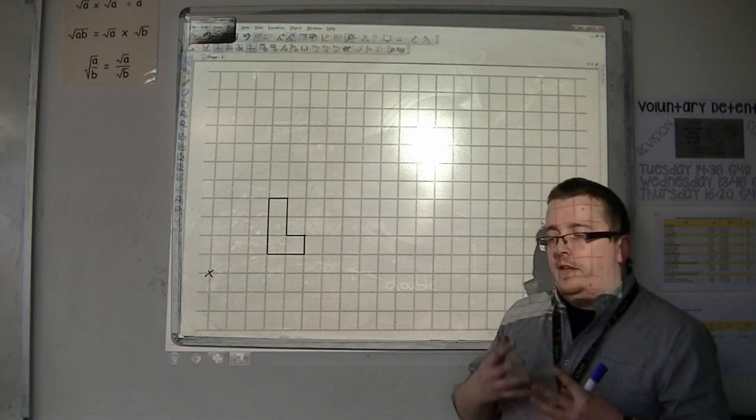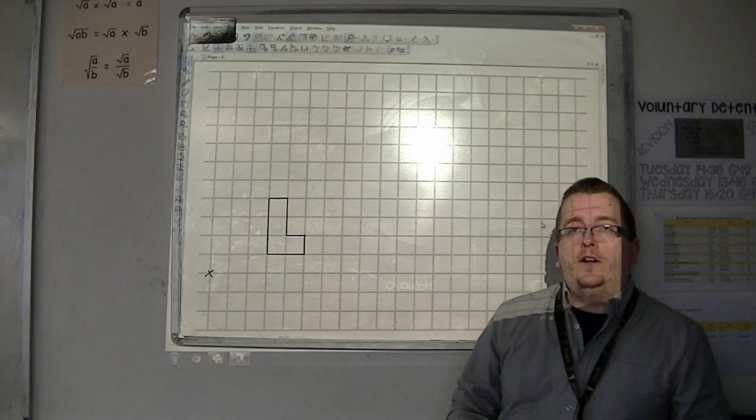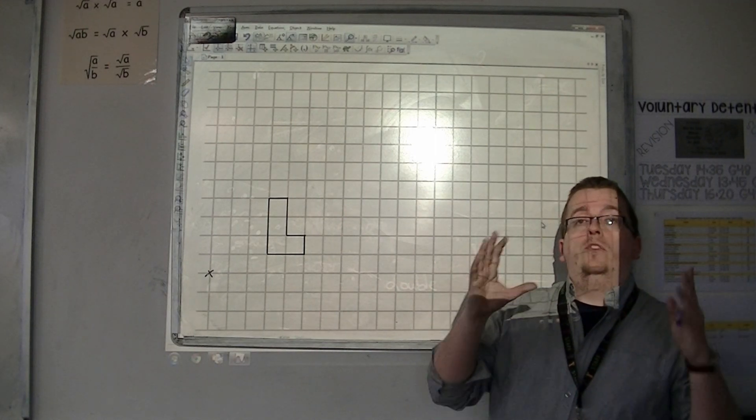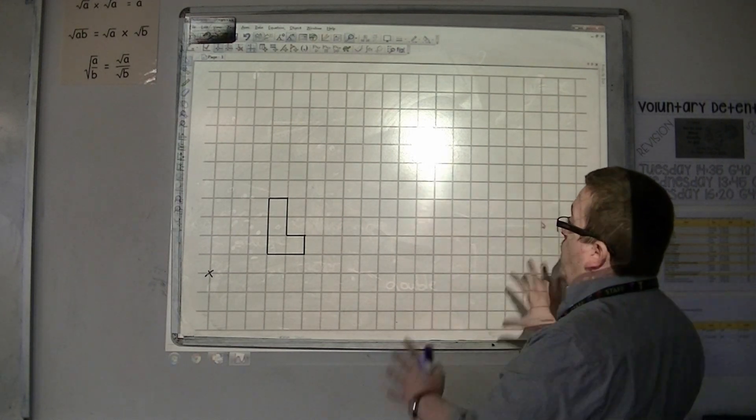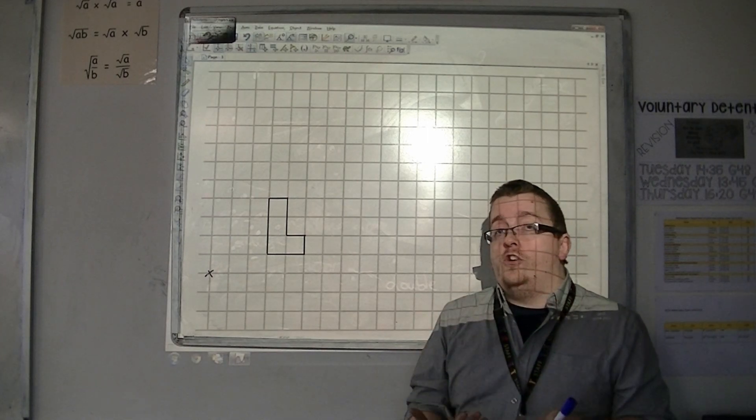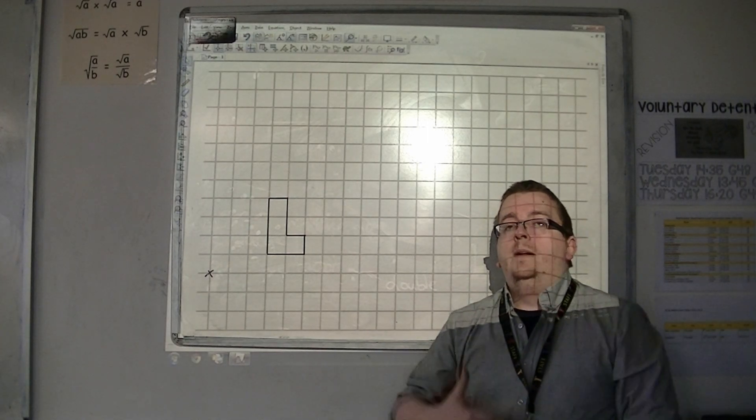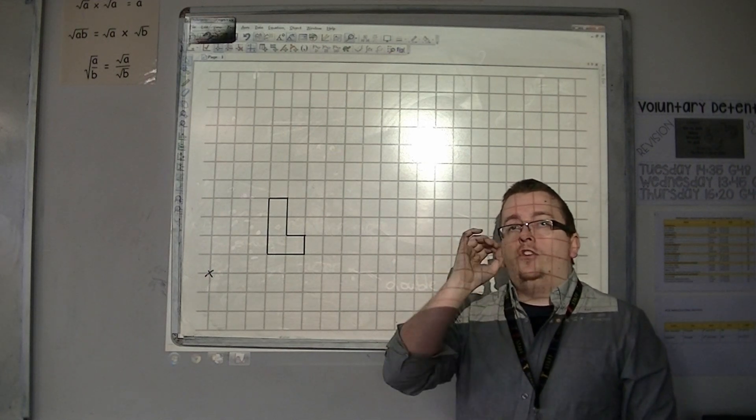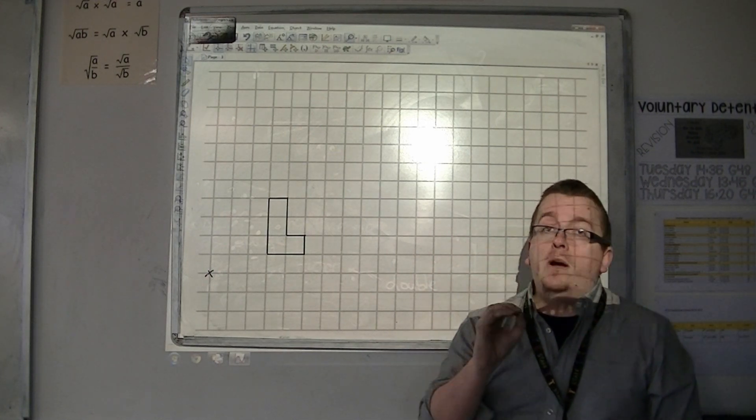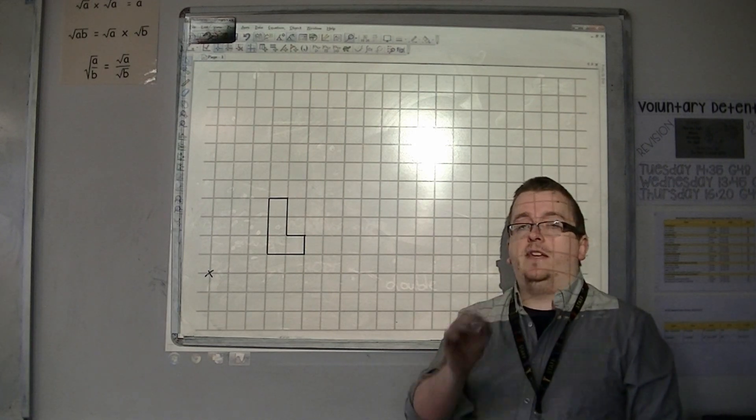If you have no centre of enlargement, you can draw the new shape anywhere you want on the grid, as long as it has been enlarged by that particular scale factor. The centre of enlargement fixes your answer in place, so it must appear in a very particular place.